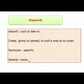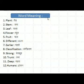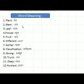Now we will learn word meanings. Plant — stem means tana. Leaf means patta. Flower means phool. Fruit means phool. Different means different.